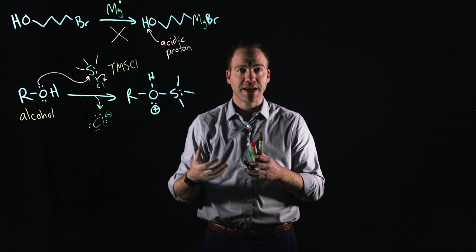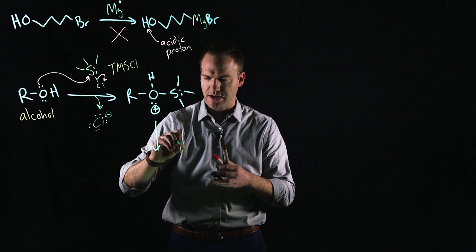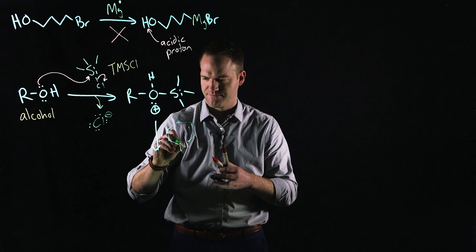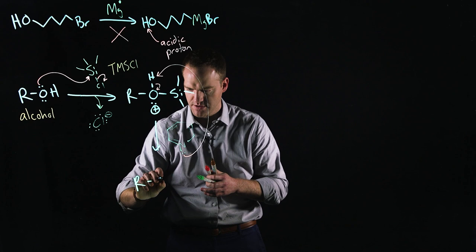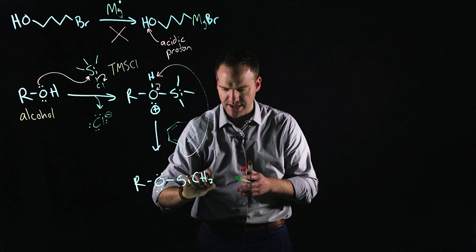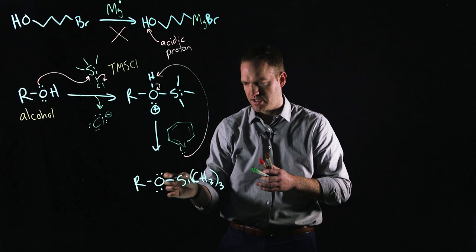TMSCl is often paired with the basic solvent pyridine. Pyridine, you might remember, is a benzene ring with a nitrogen in it, which can act as a base to take a proton from this molecule and make our R-O-silicon with three methyl groups on it. So I'm going to write that a slightly different way with methyl and three. It's the same way of drawing this out, but in a smaller notation.